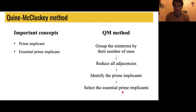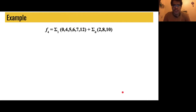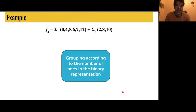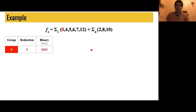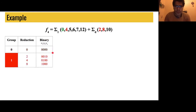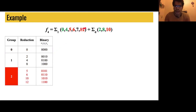So let's start with an example. We have the following function that has to be minimized. The first step is to group the minterms by the number of ones in their binary representation. In this case of an incompletely specified function, we also have to consider the don't care terms in this process of grouping. We create a table where the group number represents the number of ones of the minterms, the minterm index is in the reduction column, and the binary representation is in the binary column. We complete the table, including the don't care terms.